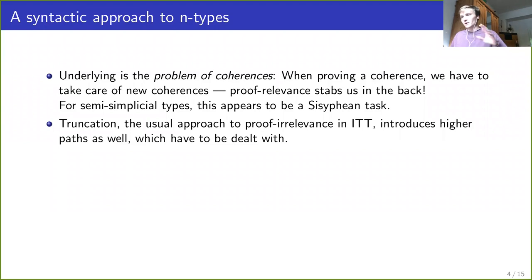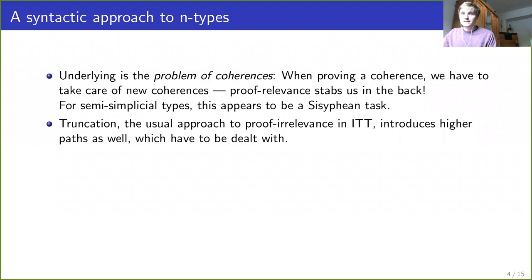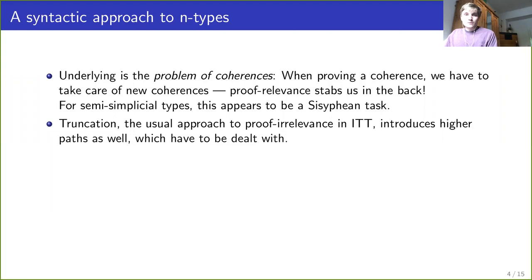For example, when we have some associativity law we need to prove it, and then we might have different proofs of this associativity and we have to somehow show that these fit nicely together again. When doing this for semi-simplicial types in Book HoTT it appears that there's an infinite tower of coherences that need to be taken care of, so this appears to be not possible.